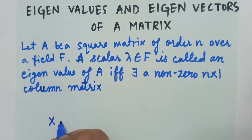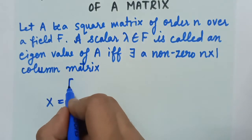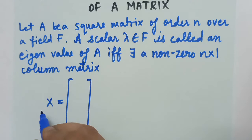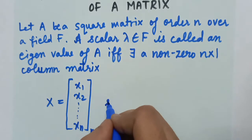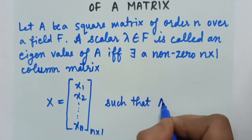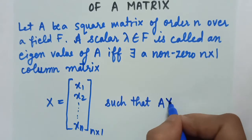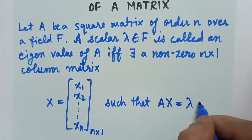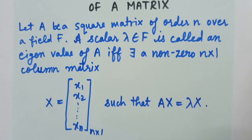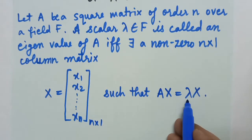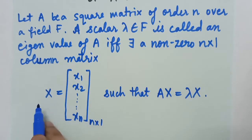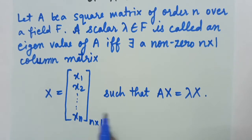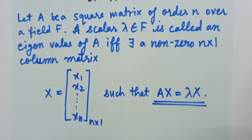Suppose the column matrix is X, with entries X1, X2 and so on up to XN. This is an N cross 1 order column matrix such that A times X is equal to lambda times X. This is the condition for an eigenvalue of matrix A — there exists a non-zero N cross 1 column matrix X such that A into X equals lambda into X.